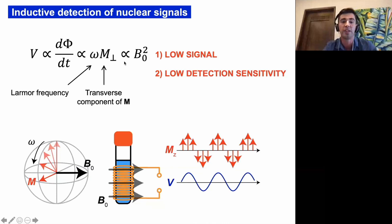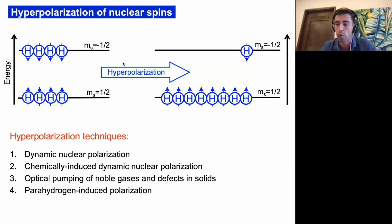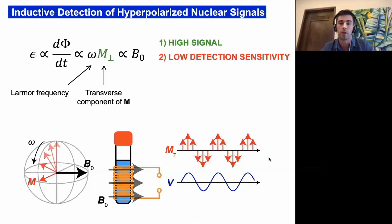To fix that problem we need to fix both issues: obtain high signal without magnetic fields, and detect that signal without magnetic fields. The first approach is hyperpolarization. Many techniques developed over the last decades can create extremely hyperpolarized nuclear spin states where the signal is high. In particular, para-hydrogen induced polarization (PHIP) and its variant SABRE — signal amplification by reversible exchange — allow you to obtain very high magnetization from the sample even without using extremely high magnetic fields.